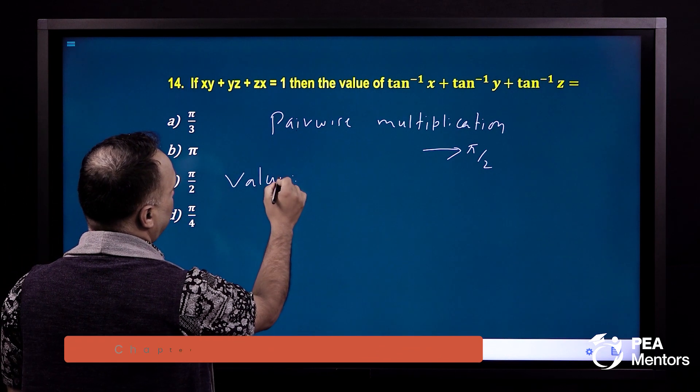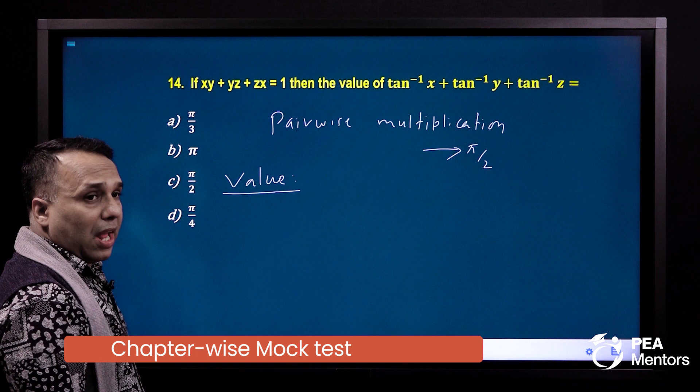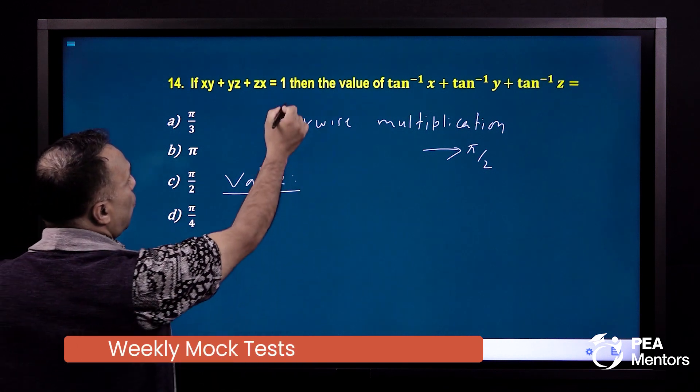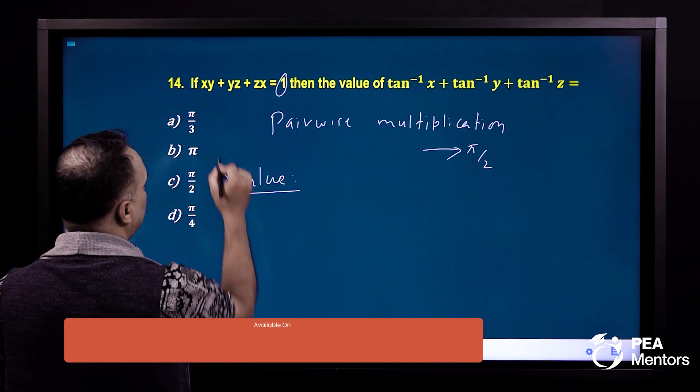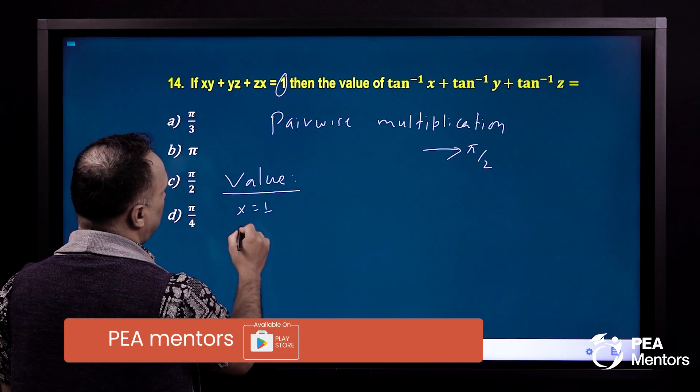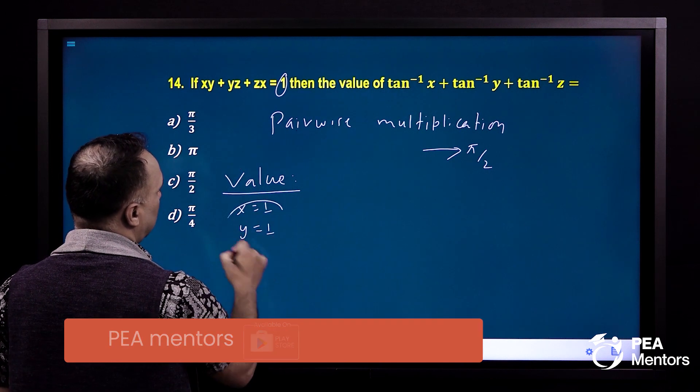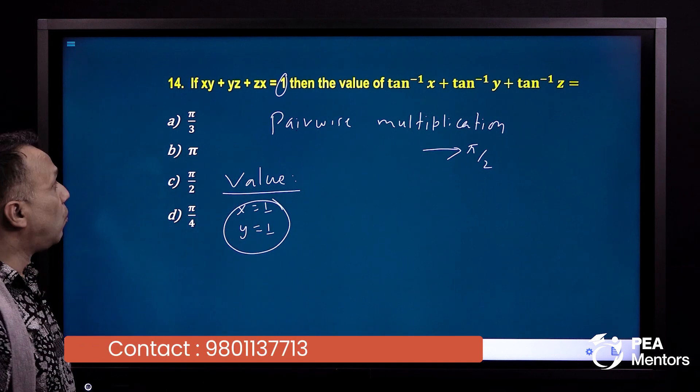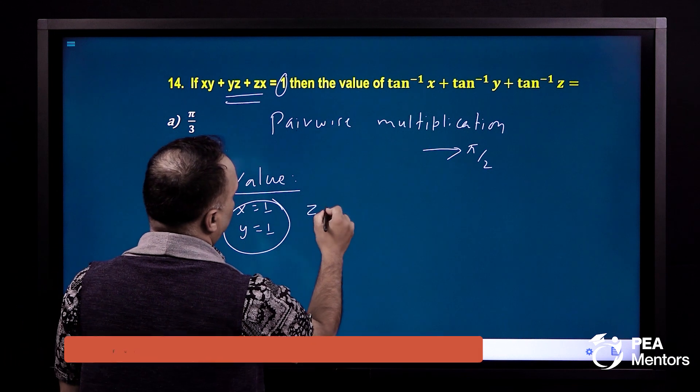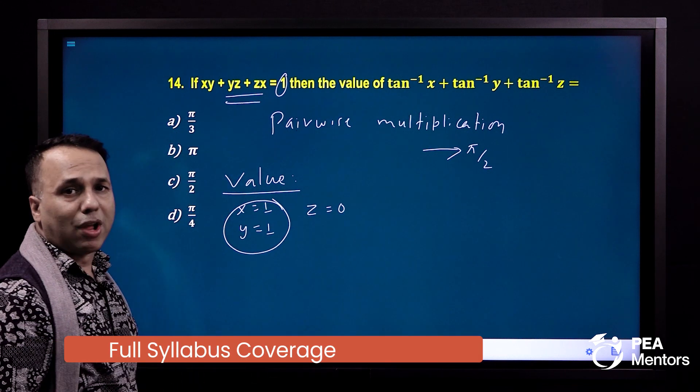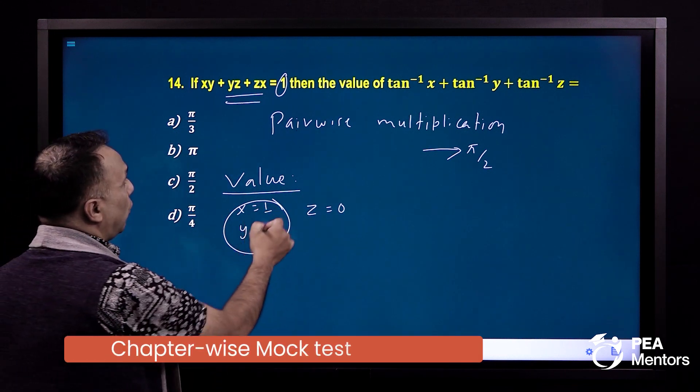I will tell you. If you do this, you will see 1. I will maintain this 1. What do I do? I will substitute values: x is 1, y is 1.